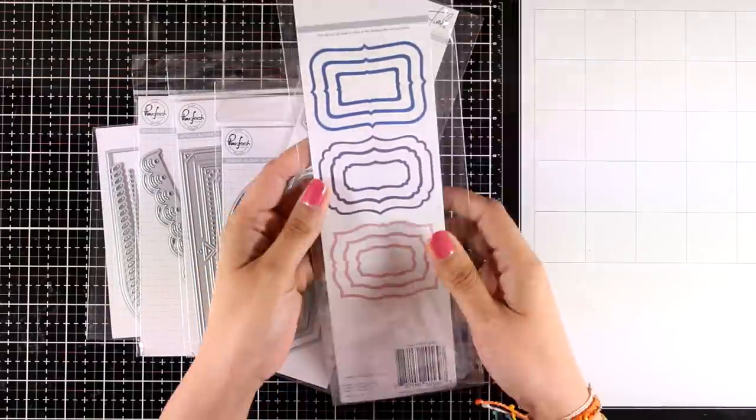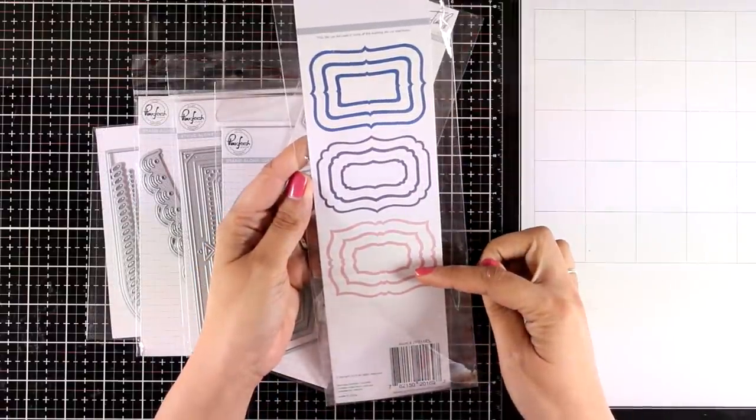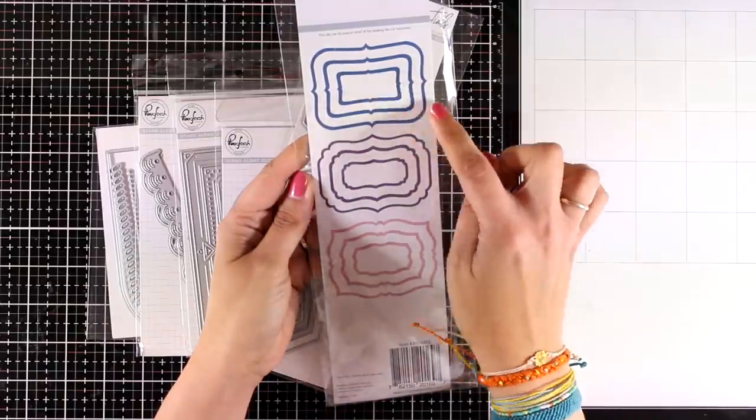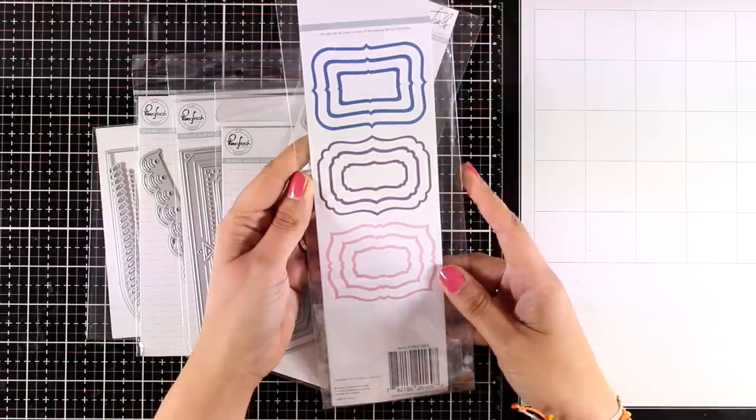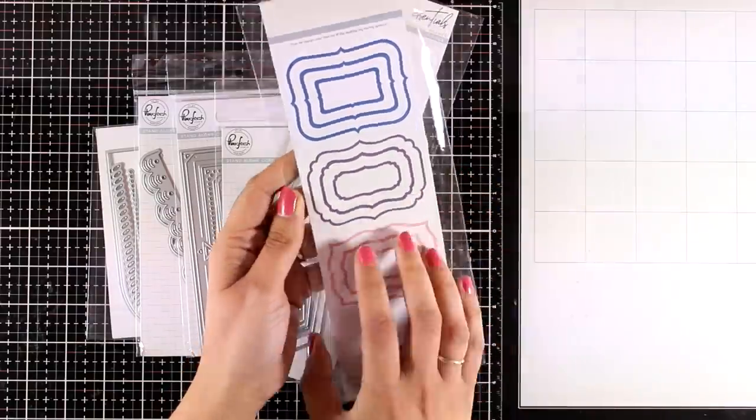Now let's take a look at the dies. These are the Fancy Label Frames - you get 12 dies included here in different sizes and different shapes, perfect for creating little frames to add your focal points on top.